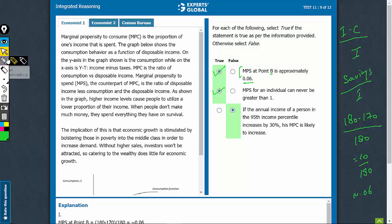To get this question right, even just this information is enough that as shown in graph, high income levels cause people to utilize a lower proportion of their income and therefore, if a person who is already in a very high income level has his income increasing further, his MPC is not likely to increase. So this is a statement that his MPC is likely to increase is likely to be false.